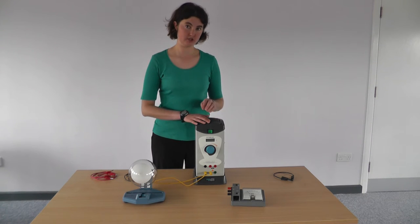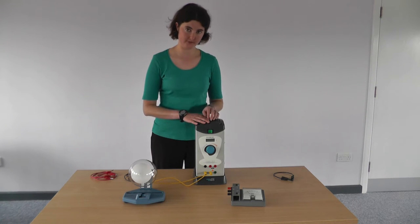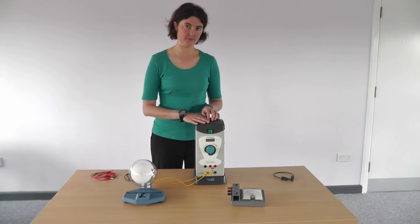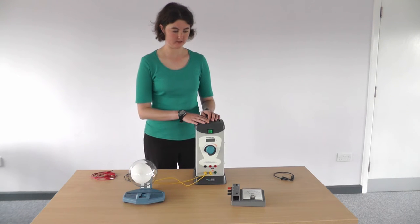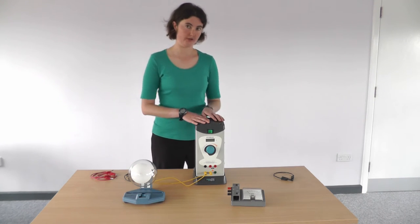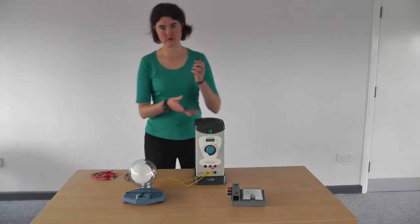Note that although the EHT supply used in school can be up to 5000 volts, they are current limited to 2-5 milliamps. This means you can't get a fatal shock from them. You don't need to use shrouded leads.